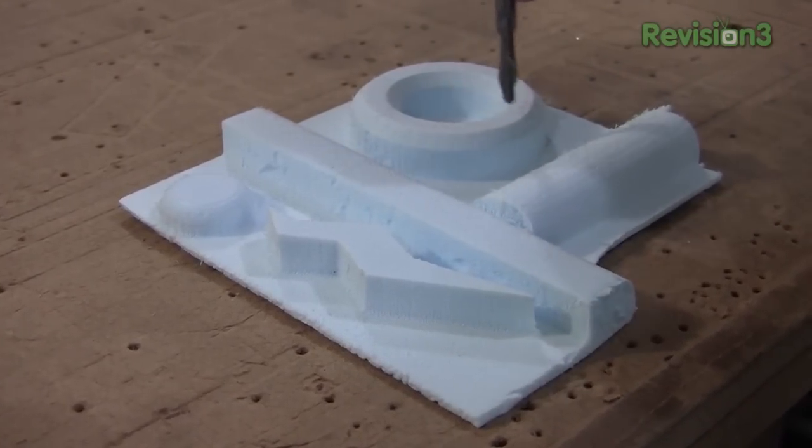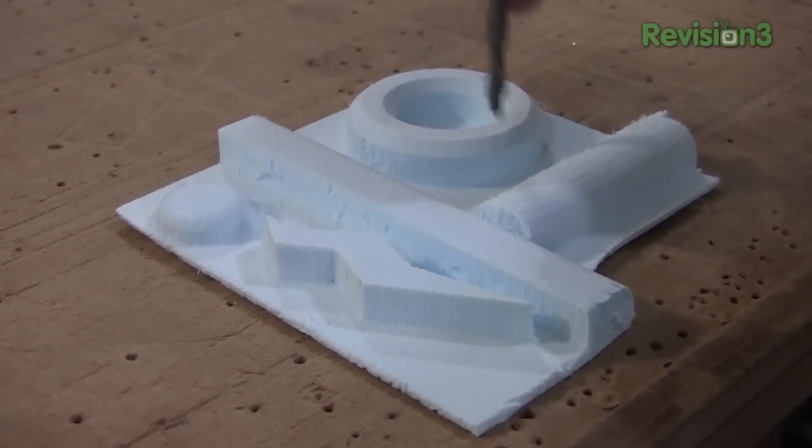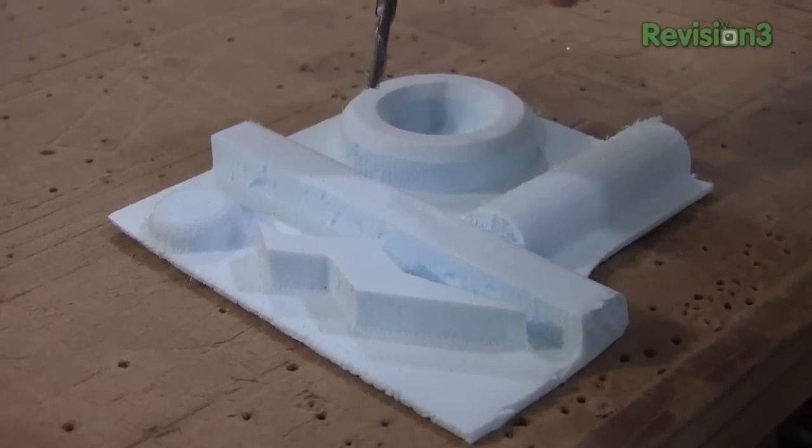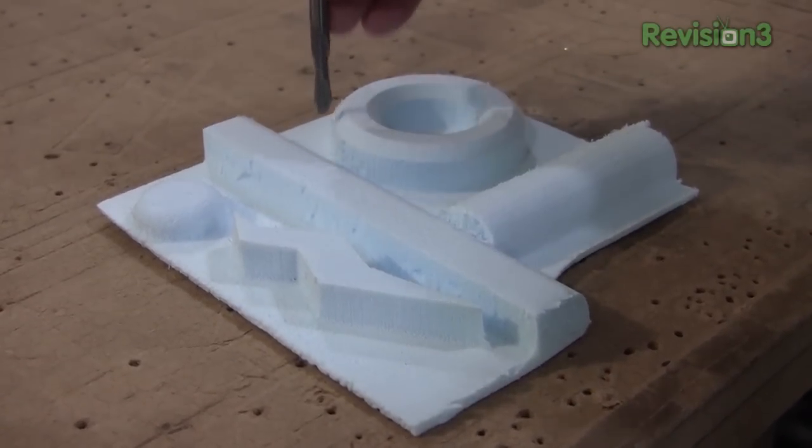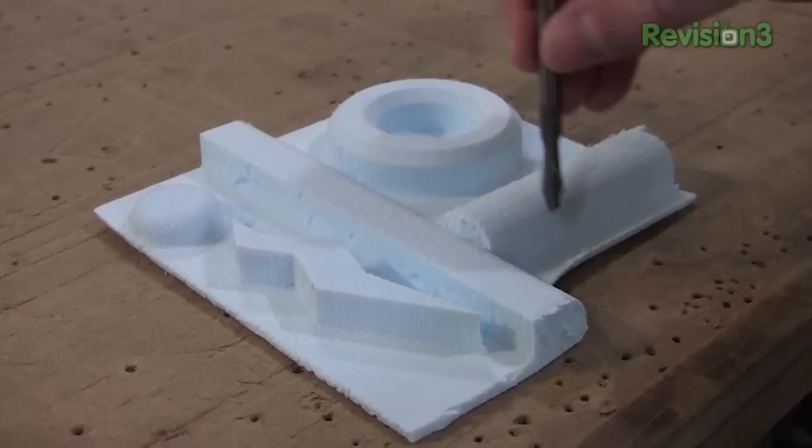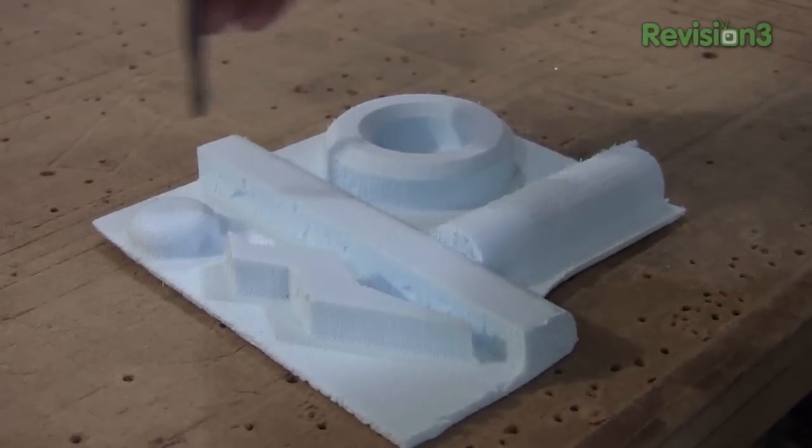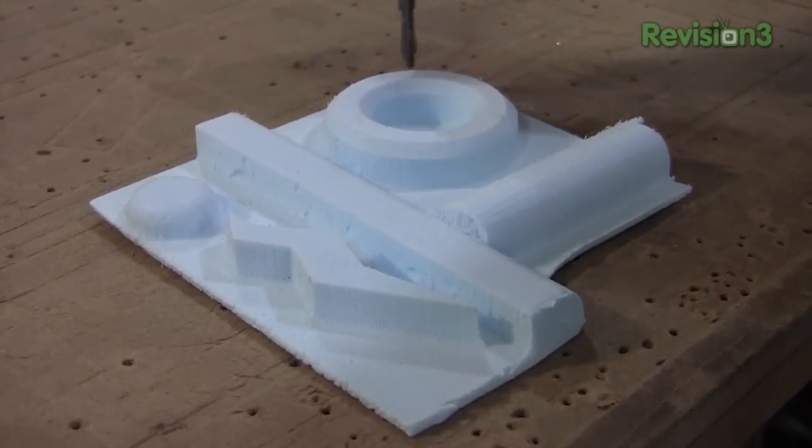CNC mills can do 3D objects as shown here, by rastering the bit back and forth through the material, leaving behind a 3D object. It's like 3D printing, but a subtractive process rather than an additive one. It's faster than 3D printing, but also much slower than normal 2D millwork.